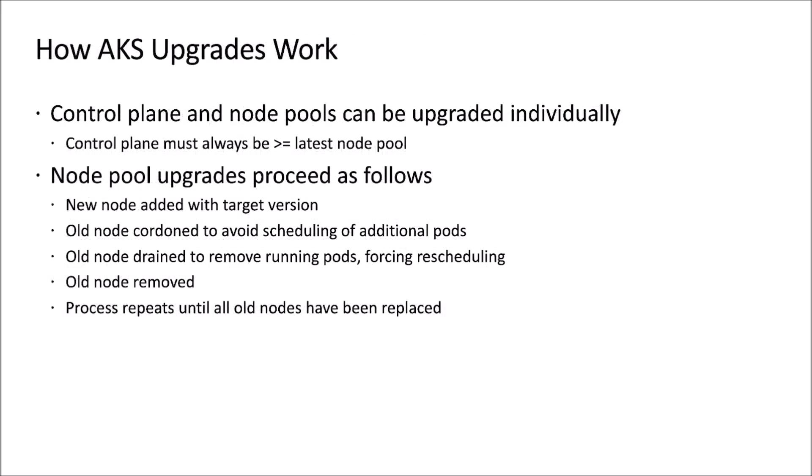So how do you actually consume those upgrades? As a managed service, AKS provides a first-class upgrade capability. You have the ability to upgrade the cluster either as a whole — both the control plane and all associated node pools — or you can do that individually, invoking a control plane-only upgrade and then working through the node pools. The only caveat is that the control plane always needs to be at the greatest version within the cluster; node pools can be behind but cannot be ahead.